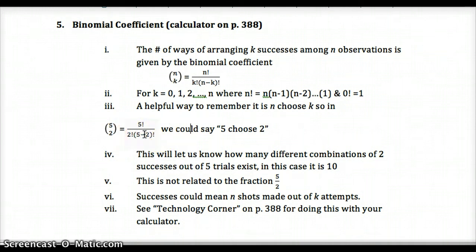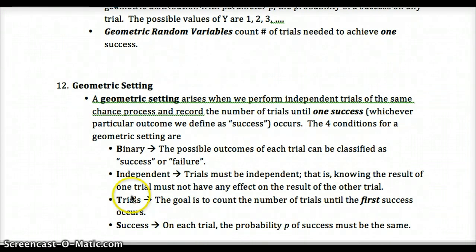Calculator shortcuts are great, but make sure you understand what you're doing so you can explain your calculations. To summarize: binomial means BINS — binary success/failure, independent trials, fixed number of trials, same probability of success. Geometric is the same except instead of a fixed number of trials, we count the number of trials until one success. In binomial we find the number of successes in n trials; in geometric we find the number of trials to get one success.